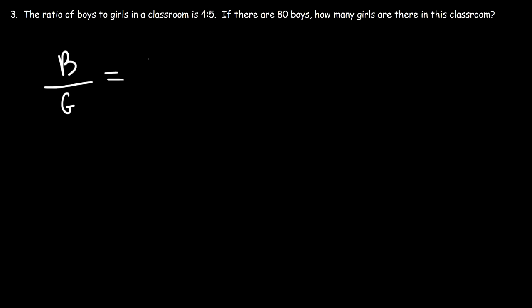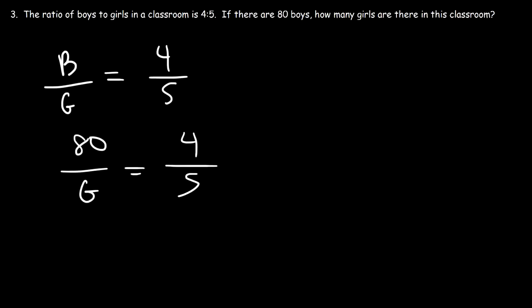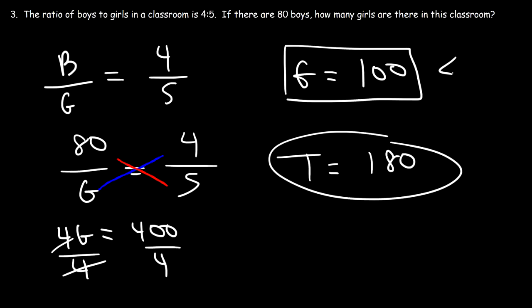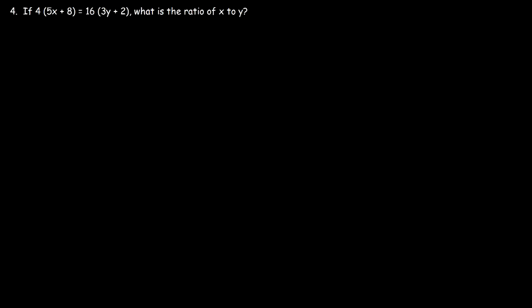Problem 3: the ratio of boys to girls in a classroom is 4 to 5. If there are 80 boys, how many girls are there? Setting up the proportion: 4 over 5 equals 80 over g. Cross-multiplying: 4g equals 400, so g equals 100. There are 100 girls in the classroom, for a total of 80 plus 100 equals 180 students.